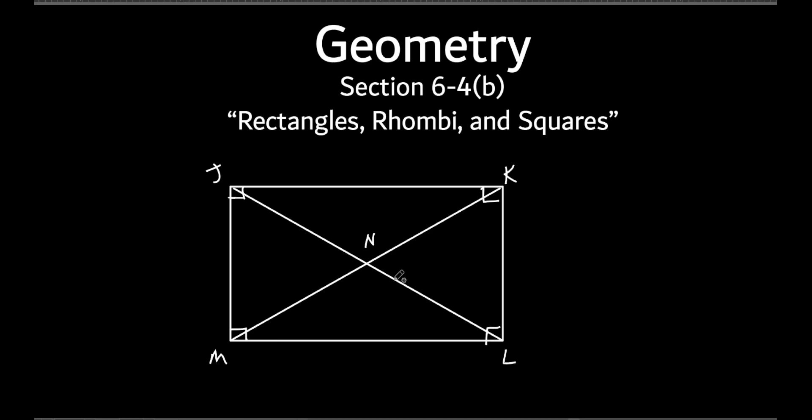So here's what they do. They tell you that JL is 5x+2, and they tell you that KM is 7x-6. And they ask you to find MN. So MN is what they're looking for. That's what we're trying to find.